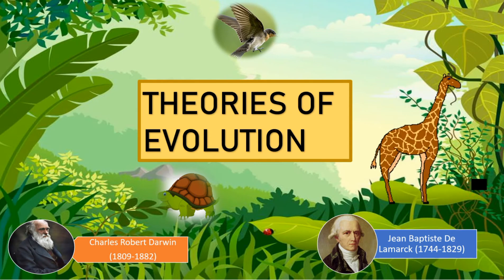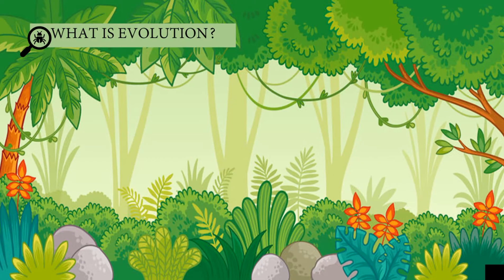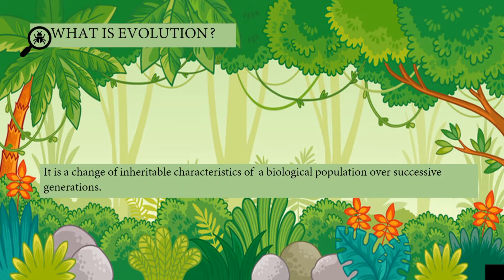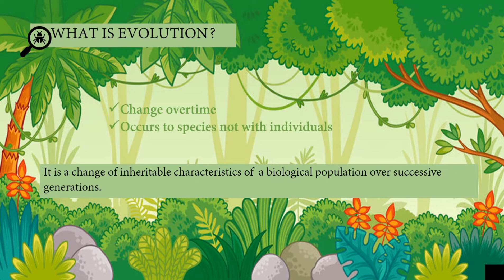Have you heard about the theories of evolution? What is evolution? It is a change of inheritable characteristics of a biological population over successive generations. It changes over time — living organisms need to adapt to a new environment in order to survive and produce offspring. It occurs to species, not to individuals. It means that if there is a change, it won't happen to only one organism; rather, the change will occur to the entire species, and it explains the diversity on Earth.